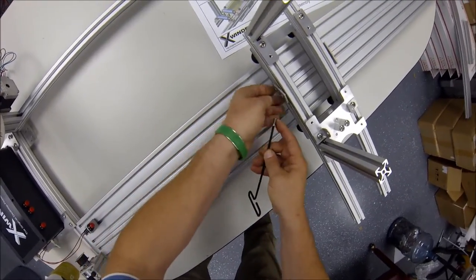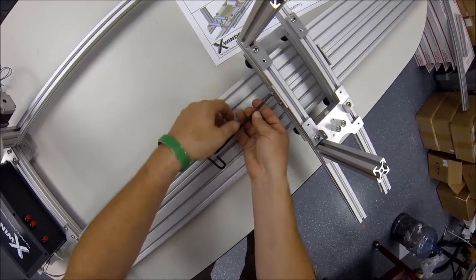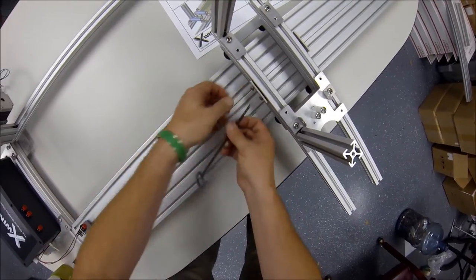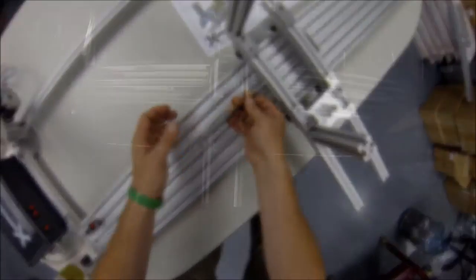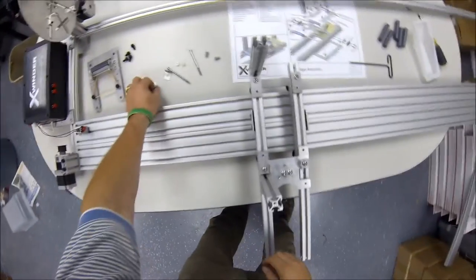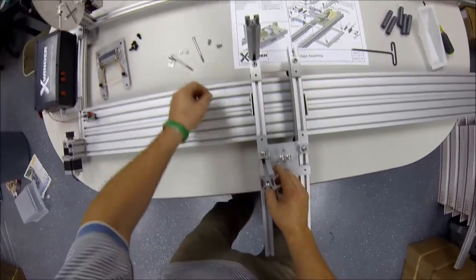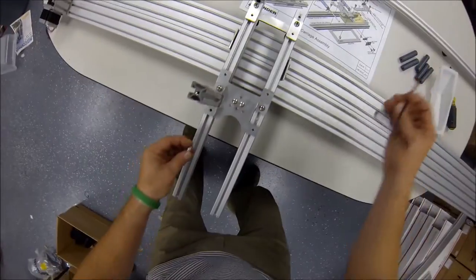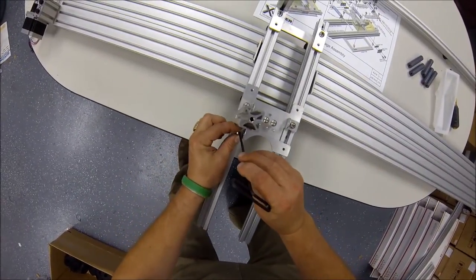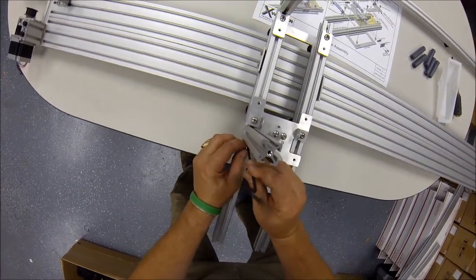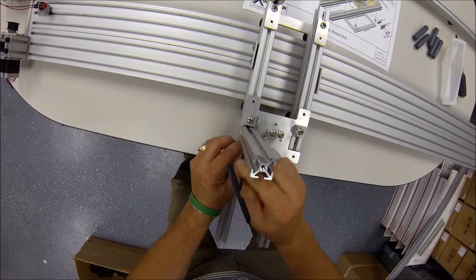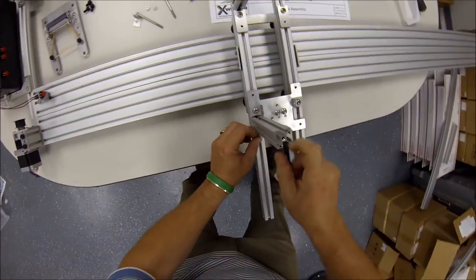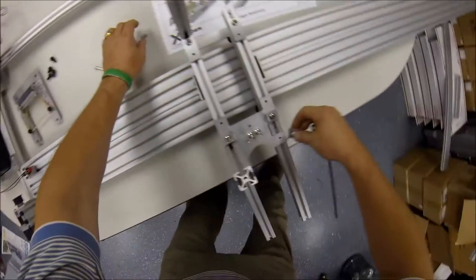So we'll go ahead and install the two delivery roller supports, both in the rear, this is the left one and the right one.